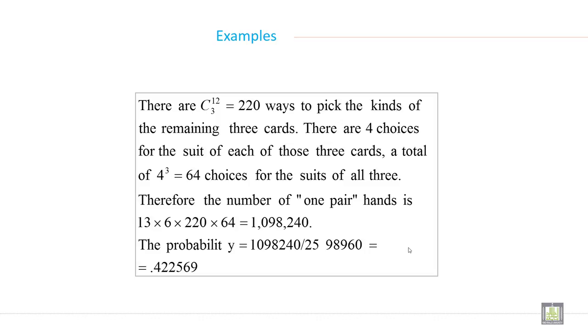Therefore, the number of 1 pair hands is 13 into 6 into 220 into 64 is equal to this figure. And the probability y is equal to it not divided by this. So it is 0.422569.